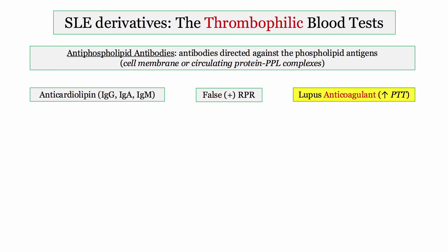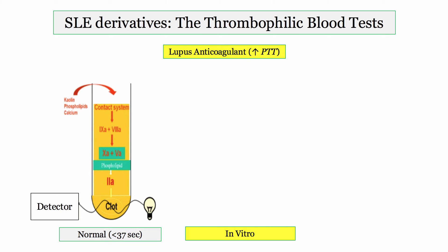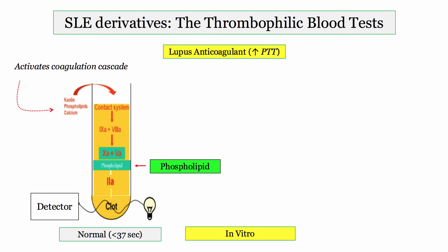The lupus anticoagulant is the most confusing concept for students. First, we are discussing blood tests associated with clotting — so why is it called an anticoagulant? And how can a patient develop blood clots if the PTT is elevated, which would suggest a bleeding problem such as hemophilia or von Willebrand's disease? To understand this: the PTT is measured in vitro by adding the patient's serum to a contact system that includes phospholipid, which activates the coagulation cascade until prothrombin is converted to thrombin and a clot is formed.